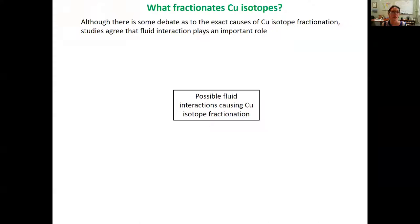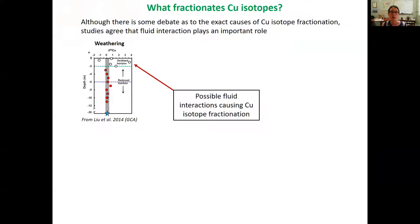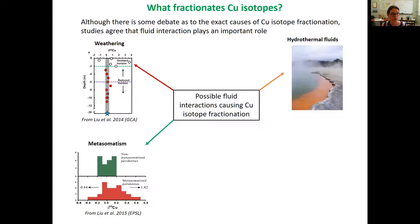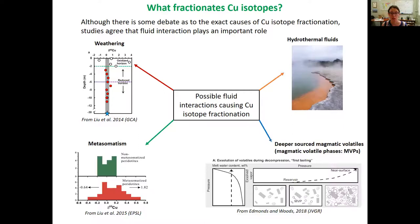What actually fractionates copper isotopes? Although there is a bit of debate in the literature about the exact causes, studies have agreed that fluid interaction plays a really important role. Some of these potential fluid interactions include surface weathering, as we can see on this diagram here with depth versus the copper isotope compositions, interaction with hydrothermal fluids, and metasomatism. The metasomatized peridotites in this example have a much larger range of copper isotopic compositions than the non-metasomatized peridotites. In this talk, I'm going to explore the potential for deeper source magmatic volatiles causing copper isotope fractionation.